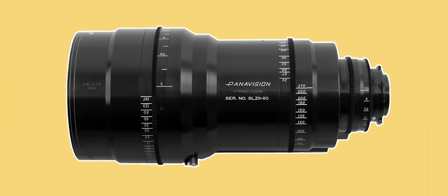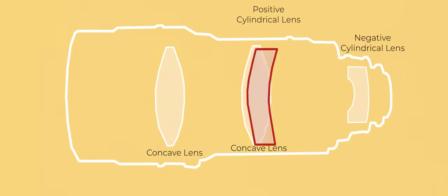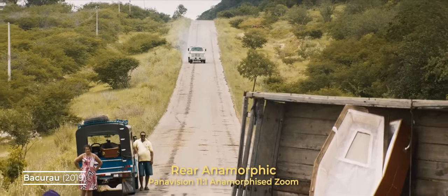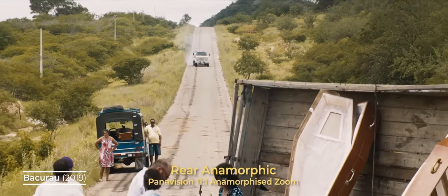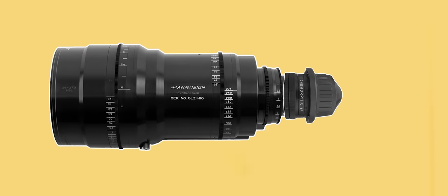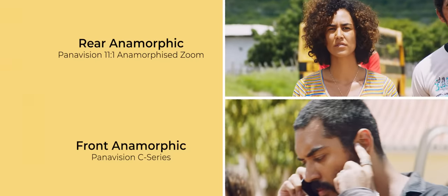There are also rear anamorphic lenses, which instead place the cylindrical element at the back of the lens, with the rest of the circular elements in front of it. This is often done to create Frankenstein anamorphised zooms, which take an existing spherical zoom lens and add a rear anamorphic element to the back of it. This produces the same effect of squeezing the image; however, rear anamorphics often lose the oval bokeh shape, which becomes a bit more rounded or even in some cases rectangular.